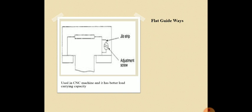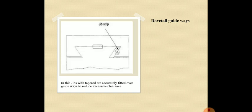Next is dovetail guideways. After a certain period of use, wear may occur. Hence, jibs with a taper are accurately fitted over the guideways to reduce excessive clearance. In such cases, dovetail guideways are used.